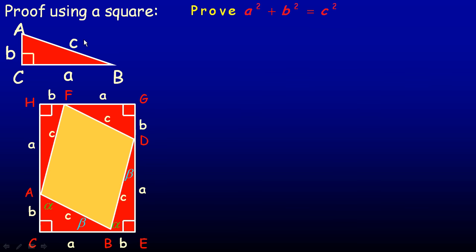This proof involves using a square. We're going to take that right triangle — kind of looks like the one from the previous page — and what I'm going to do is make three copies of it, so I have four of them altogether, and arrange them like this.